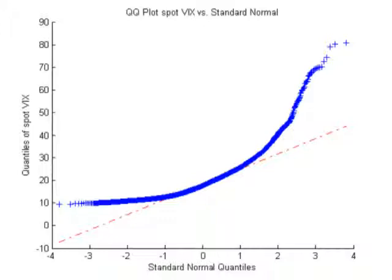We next look at the QQ plot of spot VIX. A graph shows the QQ plot. It's apparent that the distribution of spot VIX is not normal. The right tail behavior can also be seen clearly.